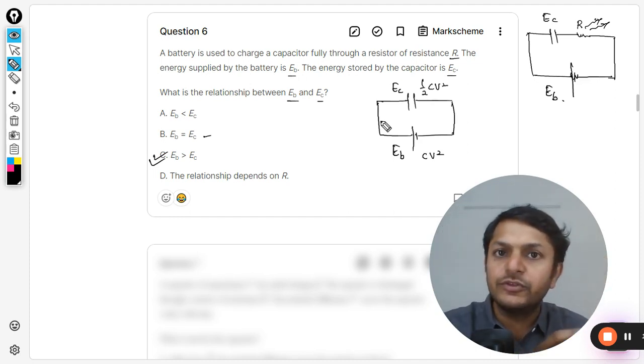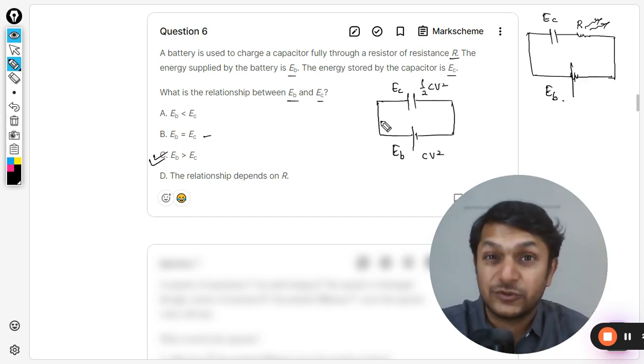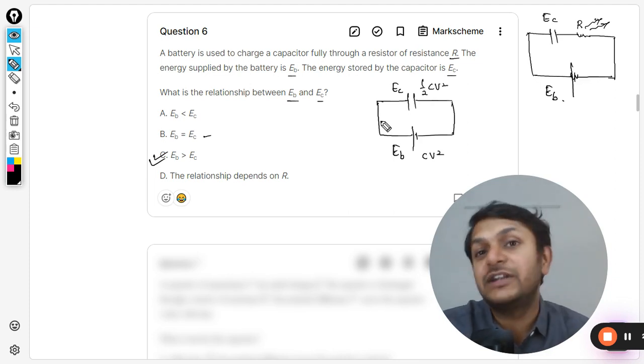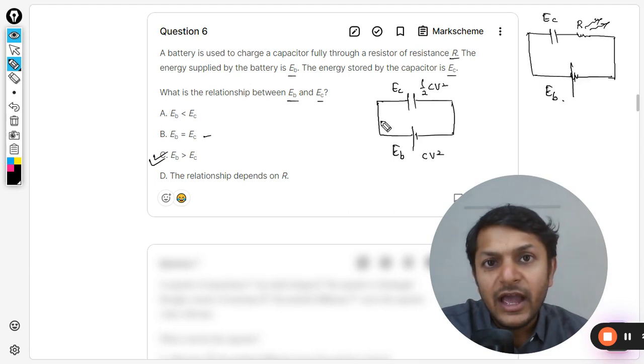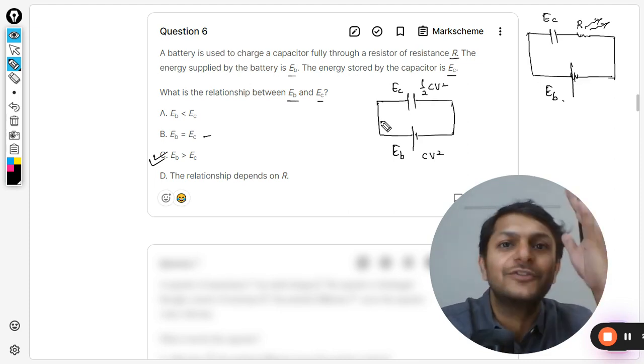Whenever you are working with capacitors and there is a switch and you are going to close the switch, at that time sparking will take place. Fifty percent of the energy will be lost in the sparking, and unfortunately you can't even get rid of the spark.